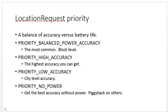The other thing to consider is Priority, which again gives us accuracy versus battery life. Balanced power is fairly common — that says just give me an idea of where I am, maybe on a block, like is there a coffee shop nearby. High accuracy means give me the absolute highest accuracy you can. Low accuracy is city level — just tell me roughly where I am. No power means give me the best accuracy without costing any battery power at all. For GPS-ing a small plant like a flower or shrub versus a large plant like a tree, I might use balanced power or high accuracy.